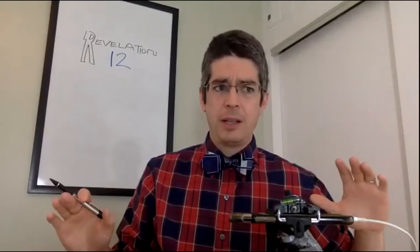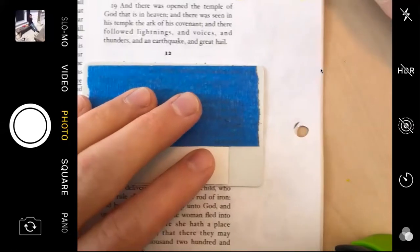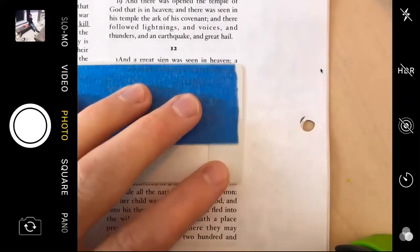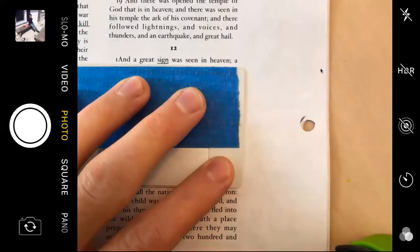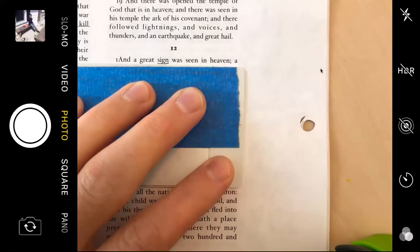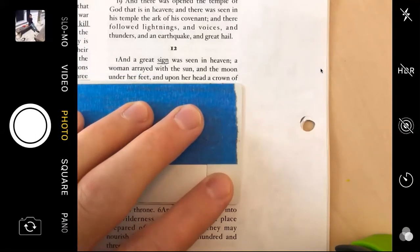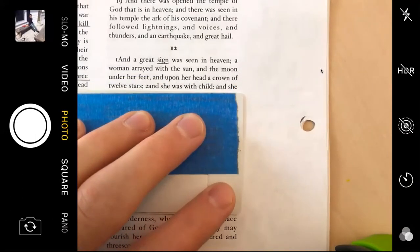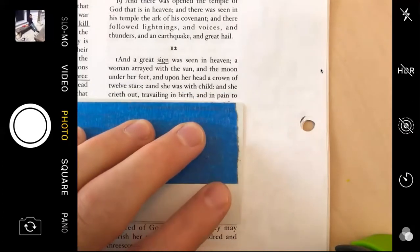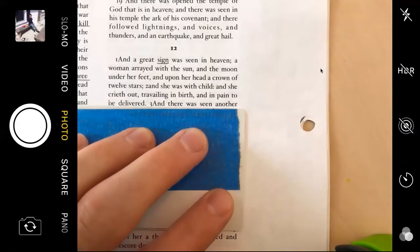What's fun is the story in chapter 12 is a little bit different, and you need to figure out where it's zooming back to. So as I start reading in chapter 12, draw little pictures and think about what story is being told. 'A great sign was seen in heaven: a woman arrayed with the sun and the moon under her feet, and upon her head a crown of 12 stars.'